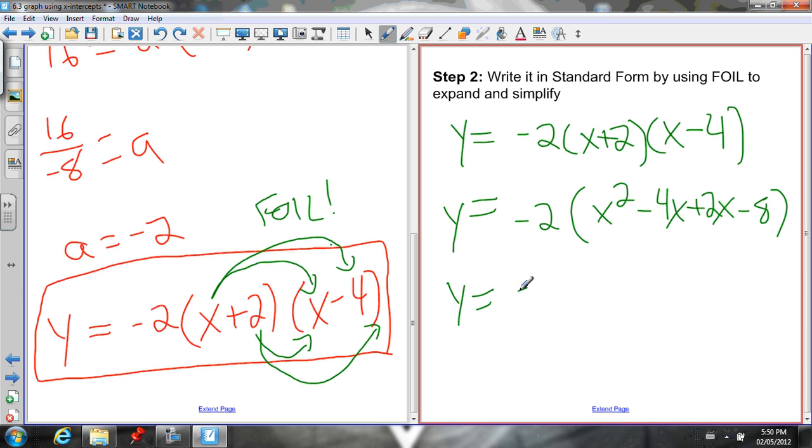I can collect some like terms. Remember, like terms are terms with the exact same variable to the exact same exponent. So, these both have an x to the 1, so I can collect those. Negative 4x plus 2x is negative 2x. Those are all the like terms that I can collect. Now, good thing I put this product in brackets so that I remember to distribute this negative 2 to each of these to get rid of the brackets.